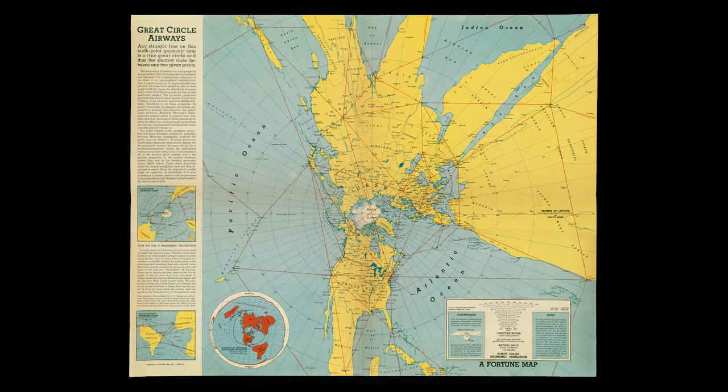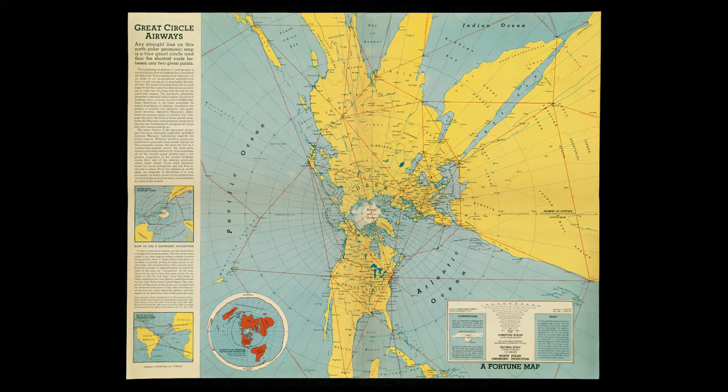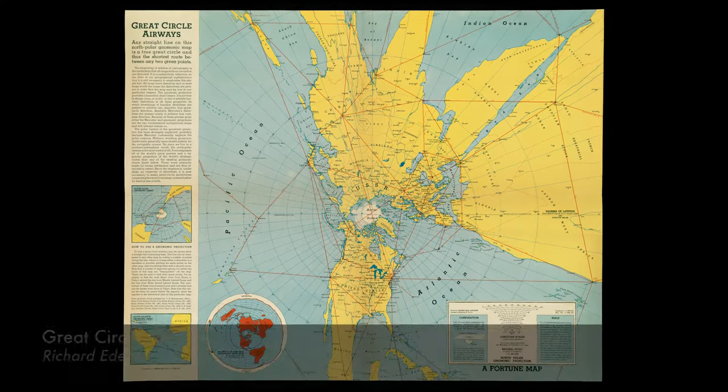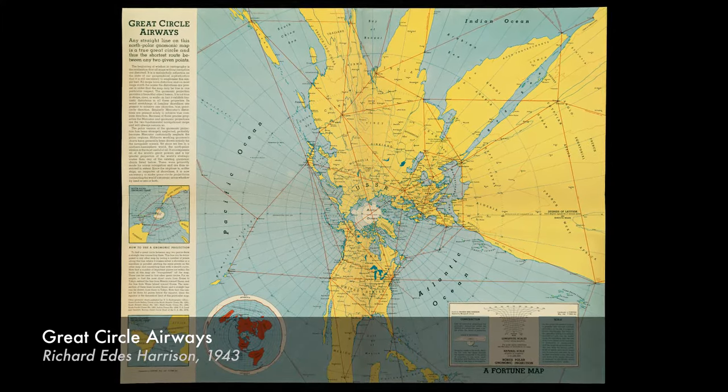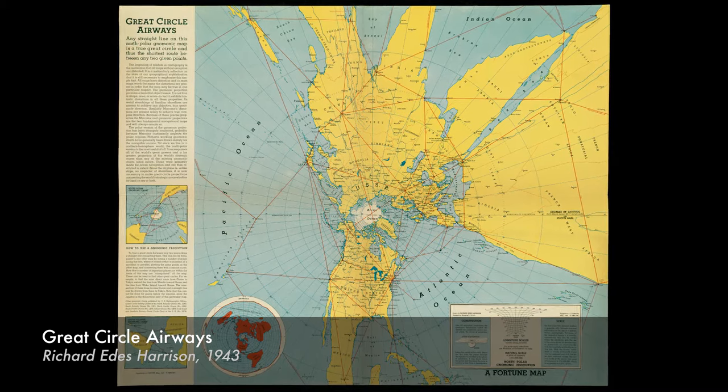One very good example is a map by Richard Eads Harrison, which was published in 1943 called Great Circle Airways. Richard Eads Harrison was this very innovative artist-cartographer during the 1930s and the 1940s, and he prepared maps to illustrate